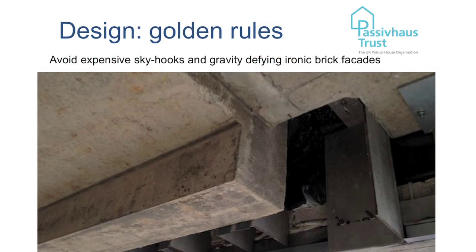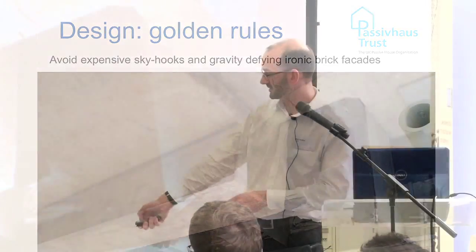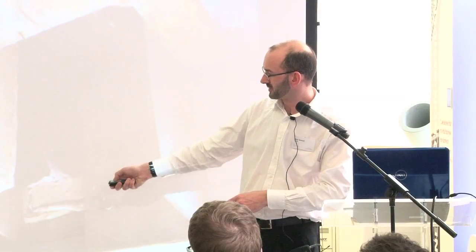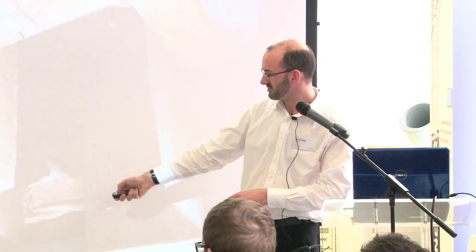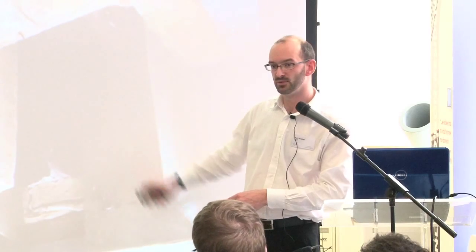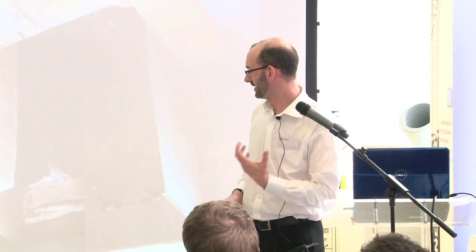Here we've got some expensive skyhooks. Basically, in order to support masonry structure as an external leaf, we've then got it suspended off the concrete beam, with mild steel structure to support that rain screen. And that is particularly complex and costly to introduce because of the thermal bridging that's introduced.